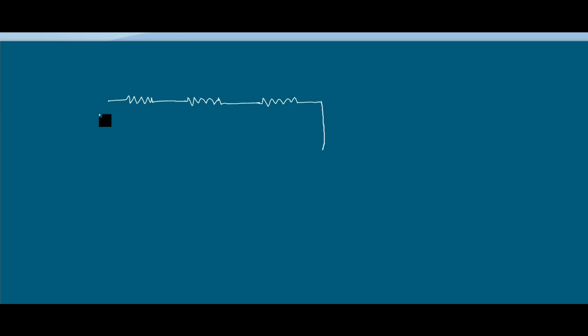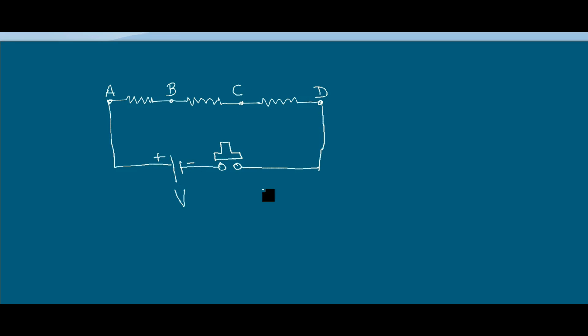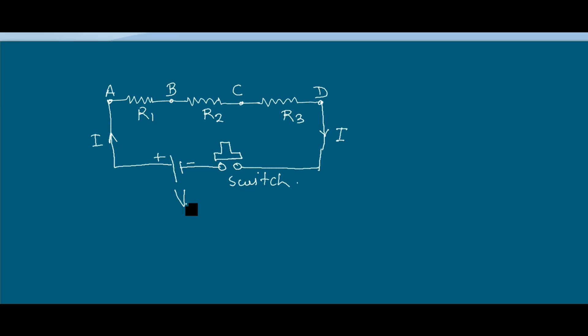Now we will discuss the series combination of resistors in detail. To explain the series combination, I first want to draw a circuit so that you can understand the combination clearly. In this circuit there are three resistors: R1, R2, and R3.